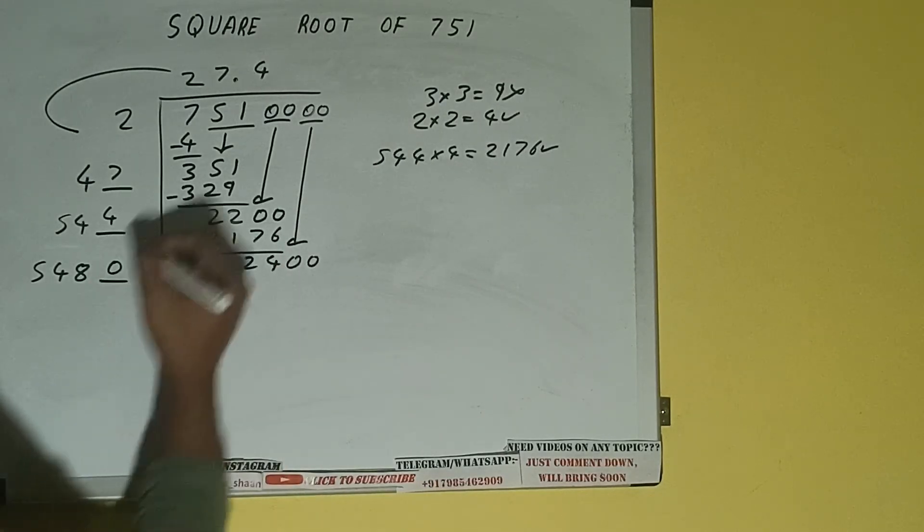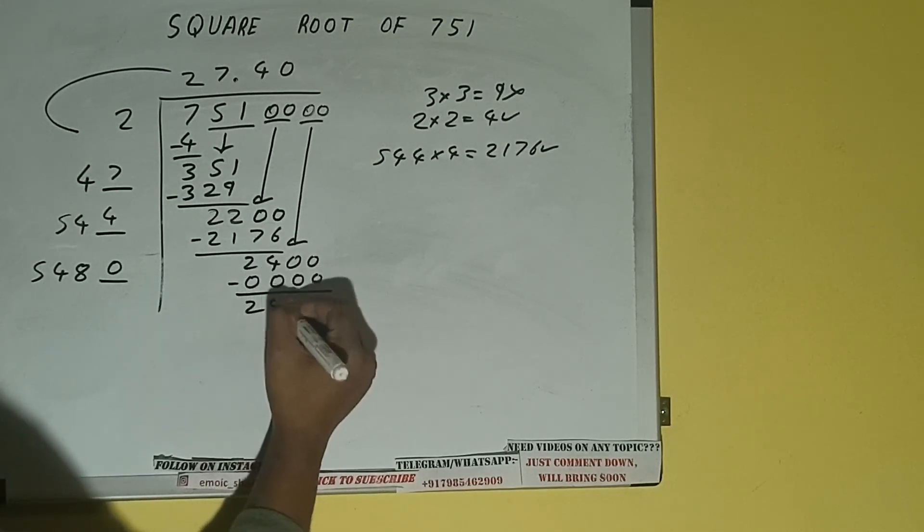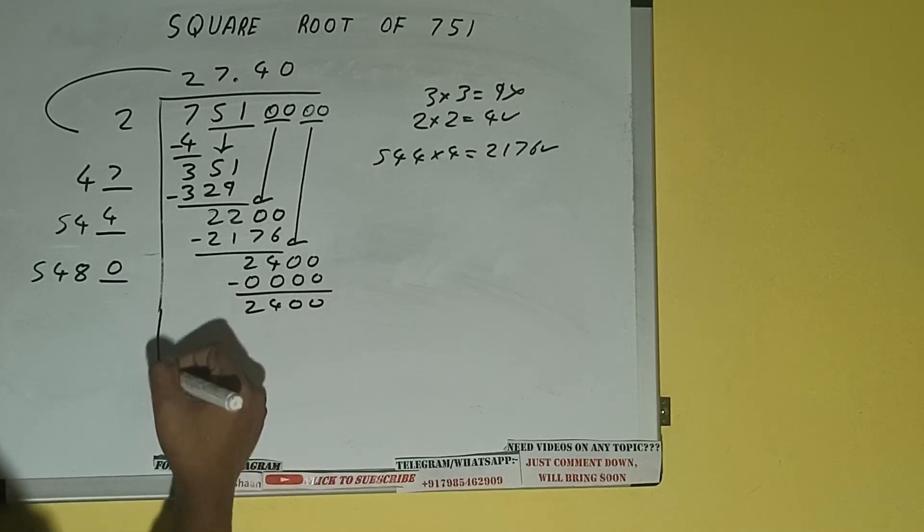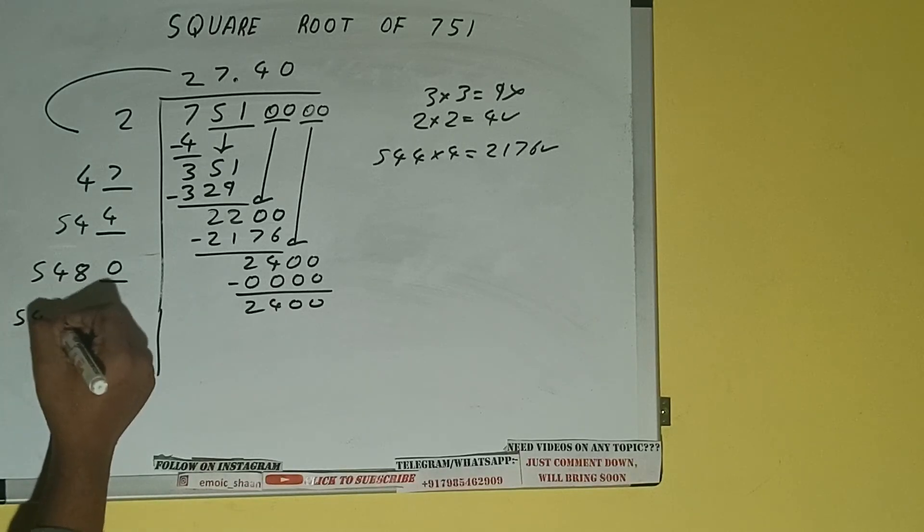Now write 0 here and 0 here. Subtract. 2400 will be left. 5480 times 0, so add both. 5480 plus 0 is again 5480.